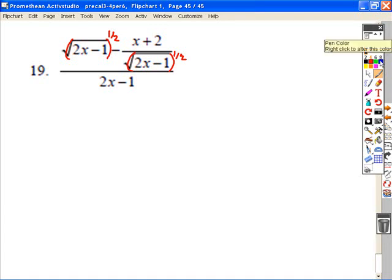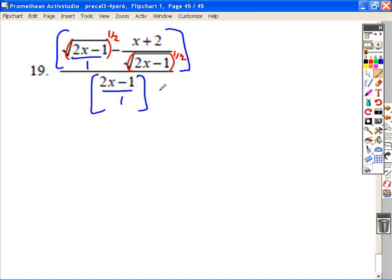And now you can solve it, again, either as a complex fraction that it's written in, or by factoring. If you solve this as a complex fraction, find your LCD. So we need a factor of one and a factor of 2X minus one to the one-half power.